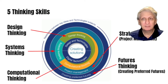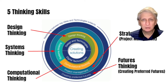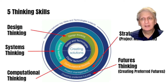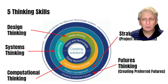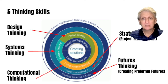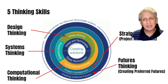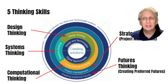Within the Australian curriculum digital technologies, we have five main thinking skills: computational thinking, which is the main focus; systems thinking; design thinking, which is the main focus of design technology but is also incorporated into digital technologies; strategic thinking; and futures thinking — or creating preferred futures — which is a set of skills that supports students' learning by helping them consider what may occur in the future through various approaches and techniques.